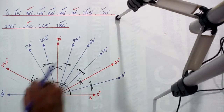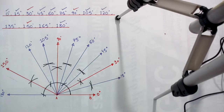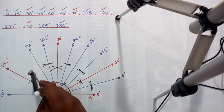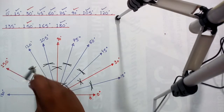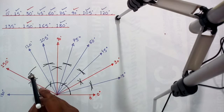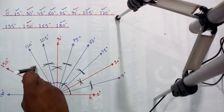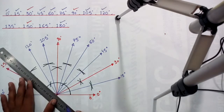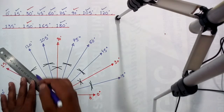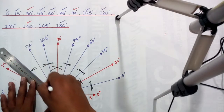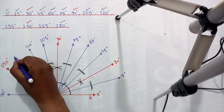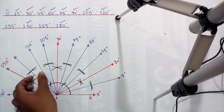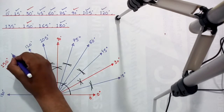Now divide this angle into two equal parts to find 135 degrees. Put the needle of the compass on this point and draw an arc, then put the needle on the next point and draw a second arc which cuts the first. Join this point with point A — 120 plus 15 equals 135 degrees.